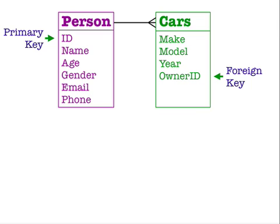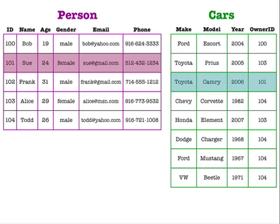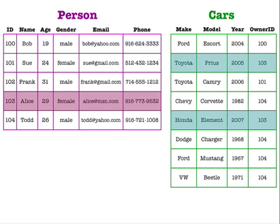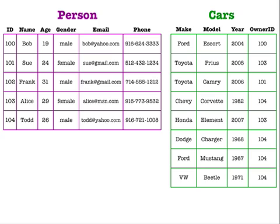This kind of attribute is called a foreign key because its values are the primary keys from the person table. In a foreign key, duplicates are allowed. In fact, duplicates are necessary because the same person could own several cars. Here is Bob's car. Here is Sue's car. Frank doesn't own any cars, so his ID number doesn't appear anywhere in the car table. Alice owns two cars — her ID number appears twice in the car table. And Todd owns four cars — his ID number shows up four times next to each of his cars. This is a much better way to organize the data in our database instead of using one large table.